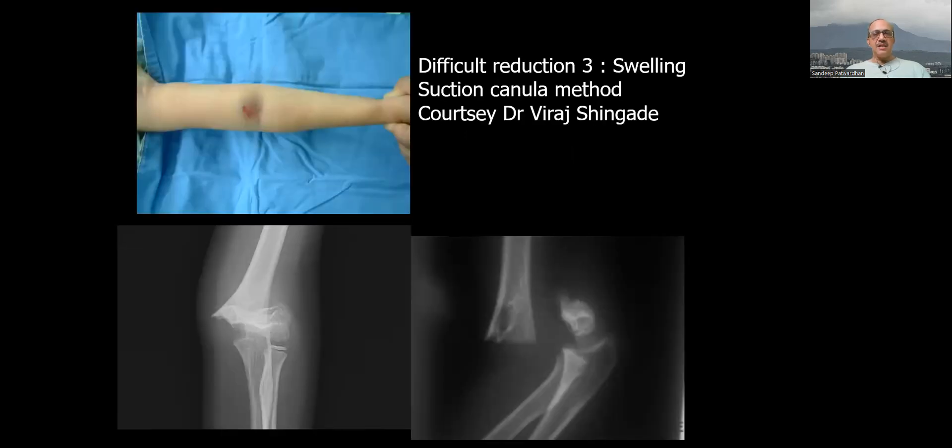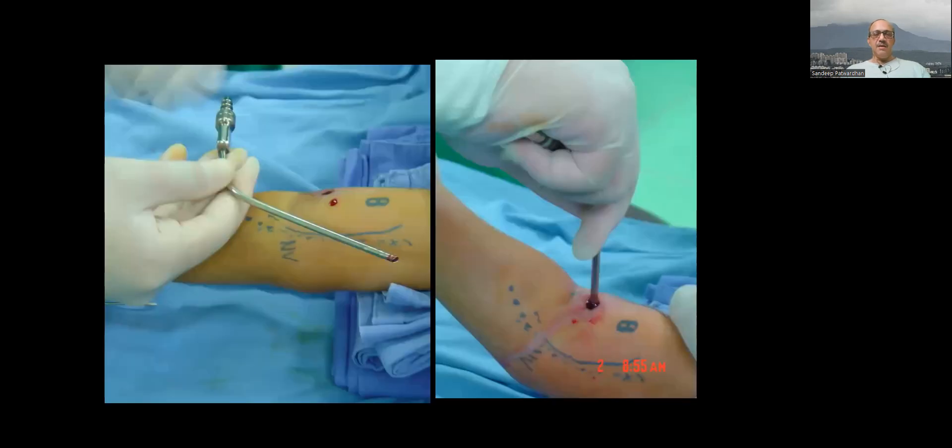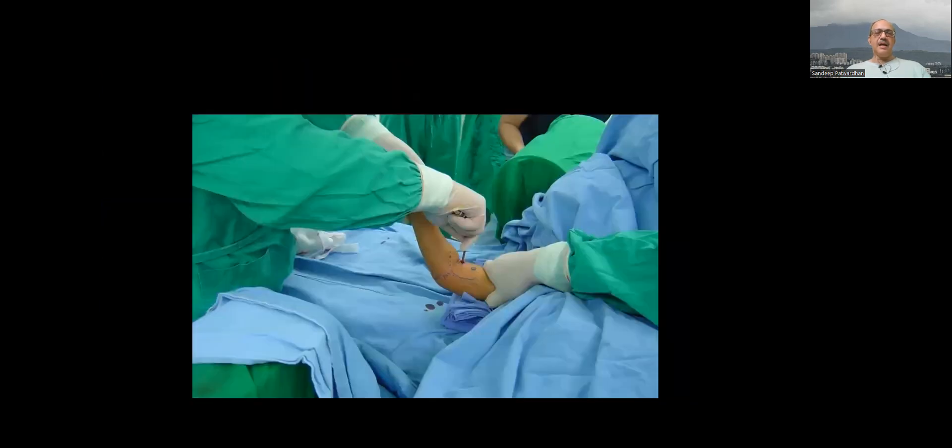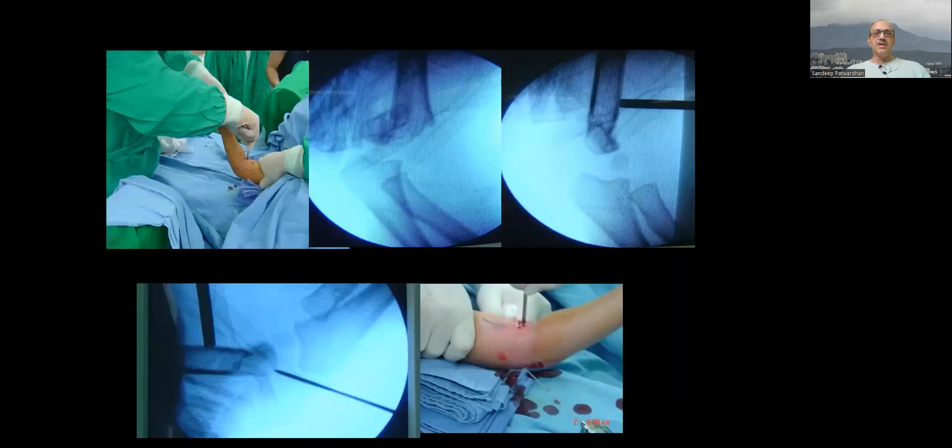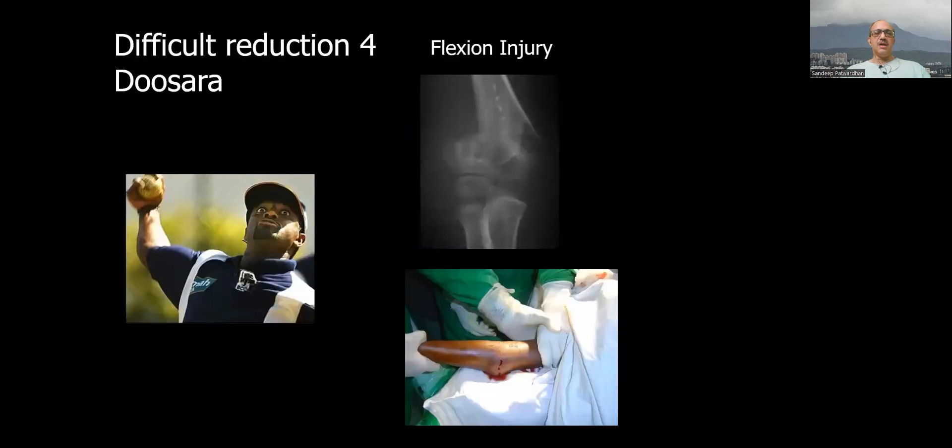If there is a large swelling, you can use the suction cannula method where you can make a small nick anteriorly, suck out the hematoma and use that as a lever to push the fragment back against which you can do a reduction. So this is the suction cannula technique where you can indirectly reduce and then pin it and then get your reduction and pinning.